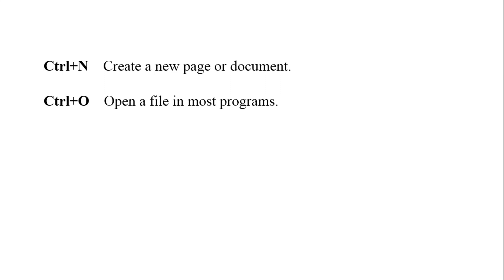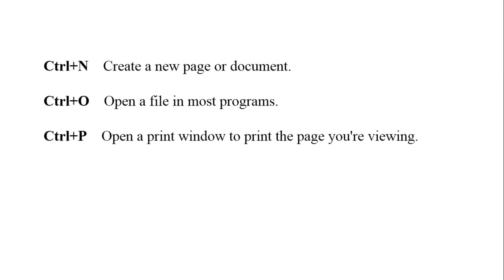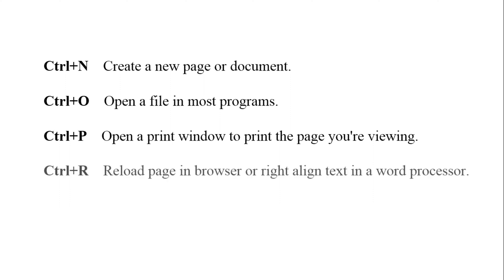The next one is ctrl plus O — it opens a file in most programs. You can remember it as O for open. The next one is ctrl plus P, used to open the print window. If we are working in any file and want to print it, just press ctrl plus P and the print window will appear.